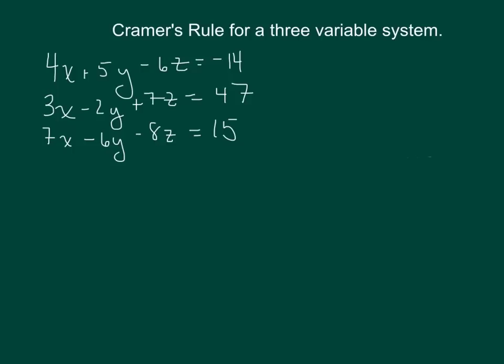When you're solving with Cramer's Rule for a three-variable system, the first thing you want to do is set up all of your matrices. Since we have x, y, and z variables that we're solving for in this problem, we are going to have four matrices.